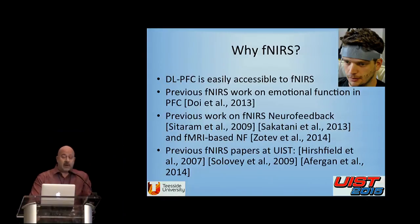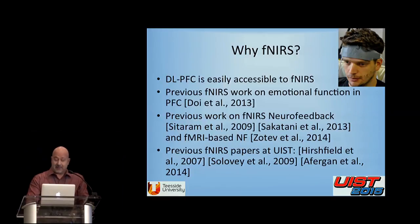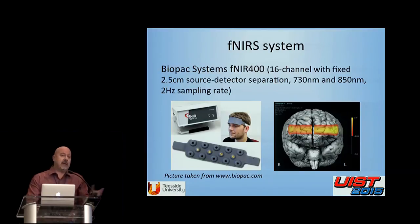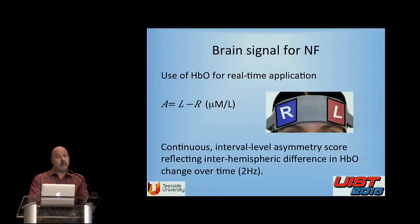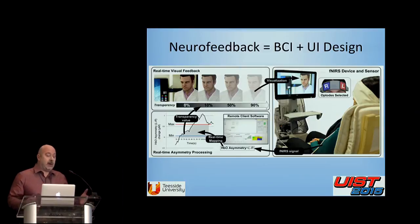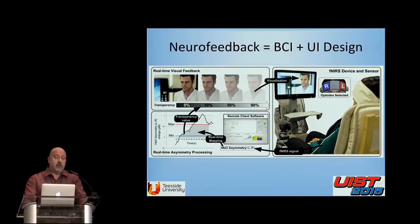We use a standard commercial fNIRS system, the Biopac, which comes with a small frontal headband with optodes. It's well-suited for us because we're only interested in a small part of the prefrontal cortex. We're mainly using HbO and simply subtracting left from right activity. This is the key part of the experiment: the real design of the neurofeedback BCI, in which subjects are asked to express anger at a virtual character.